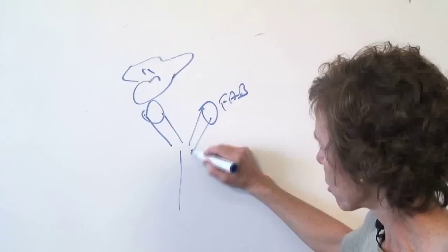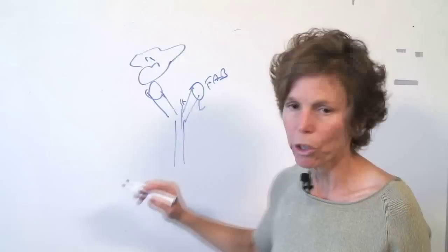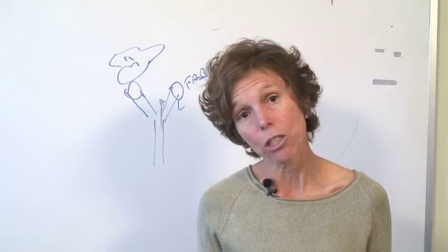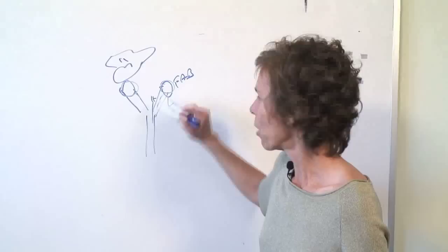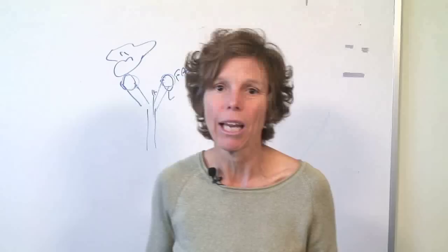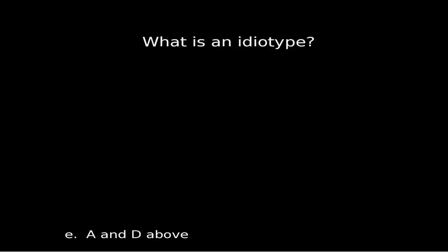When you do isotype switching — going from IgM to IgG, IgE, or IgA — you're switching the heavy chain, but you're not going to change the Fab region, which is part of the idiotype. Don't confuse idiotype with isotype. The idiotype is in the Fab region and does not change with isotype switching. The answer is A: antigenic determinant appearing only on the Fab fragments.